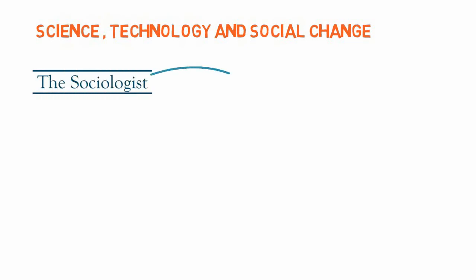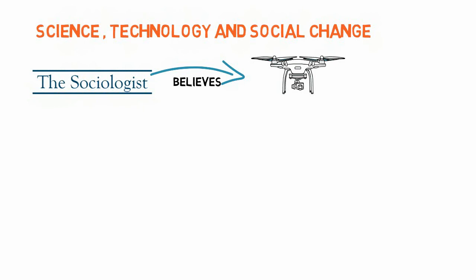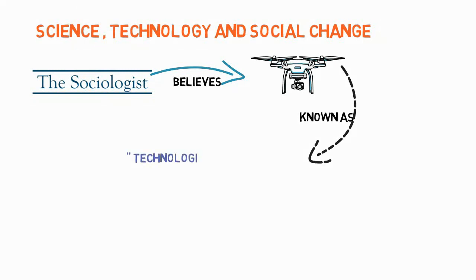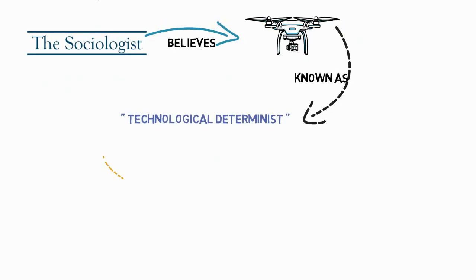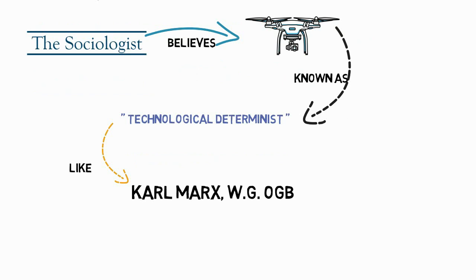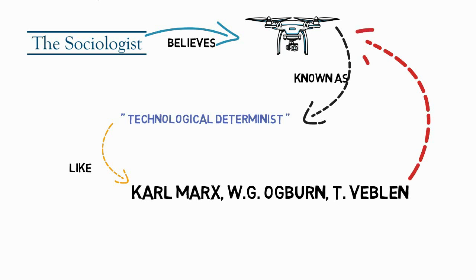Those sociologists who believe that technology brings most of the social changes in society are known as technological determinists. They believe that technology determines everything. Technological determinists like Karl Marx, W.G. Ogburn, and T. Veblen believe that society changes only when technology changes from one form to another.